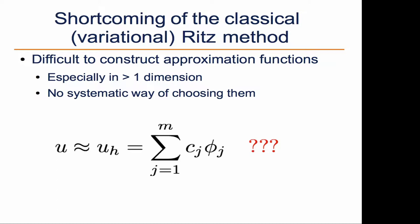The difficulty of the Ritz method is that it's difficult to come up with interpolating functions for very complex geometries and other things. And that's especially true in greater than one dimension. And there's really no systematic way of choosing them.